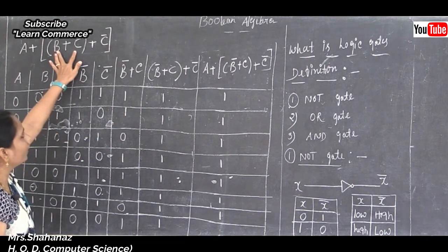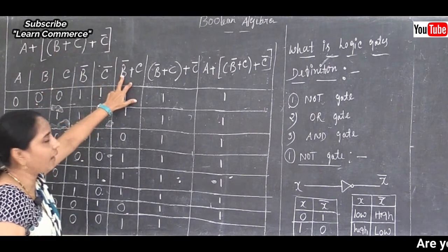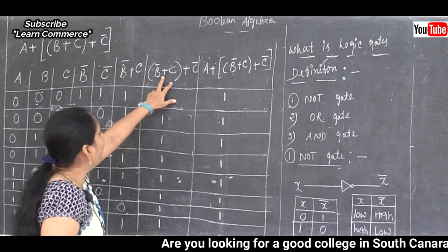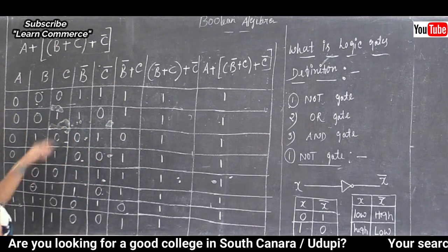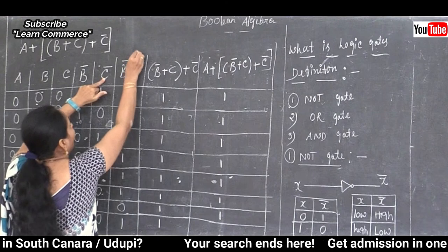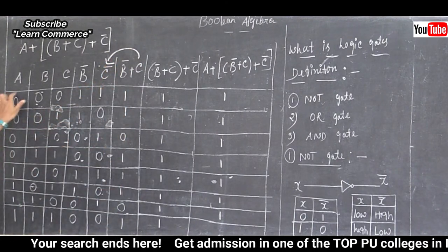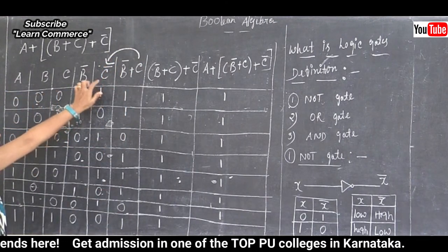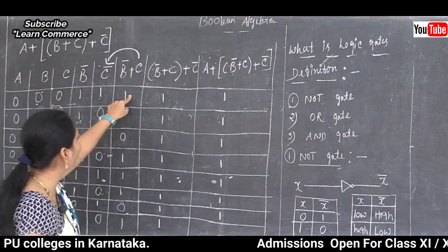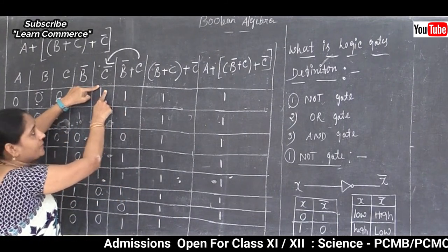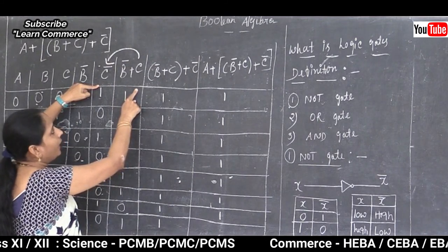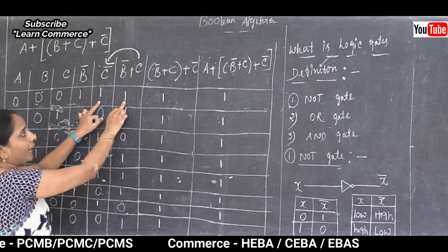Now, after getting the value for complement B plus C, we add it with the complement C column. That means we add the fifth column (complement C) and the sixth column (complement B plus C) together.